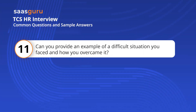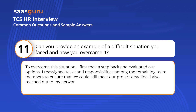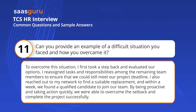Can you provide an example of a difficult situation you faced and how you overcame it? In my previous role as a project manager, we encountered a major setback when a key team member unexpectedly quit in the middle of a critical project phase, putting our timeline and budget at risk. I took a step back and evaluated our options, reassigned tasks among the remaining team members, and reached out to my network to find a suitable replacement. Within a week, we found a qualified candidate, and by being proactive, we completed the project successfully.